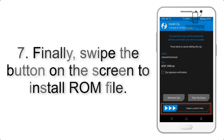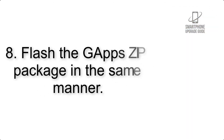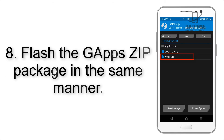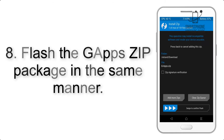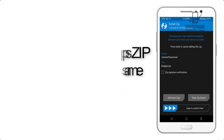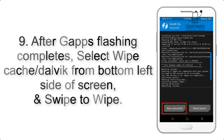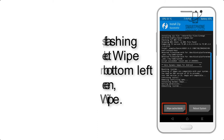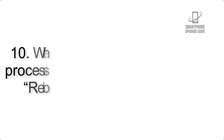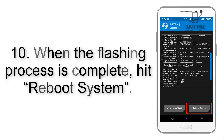Step 6: navigate to the storage and select the ROM zip file. Step 7: swipe the button to install the ROM file. Step 8: flash the GApps zip package in the same manner. Step 9: after GApps flashing completes, select Wipe Cache and Dalvik from the bottom left side of the screen and swipe to wipe.